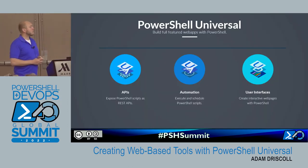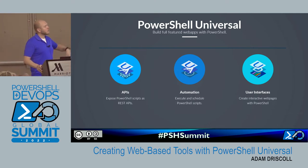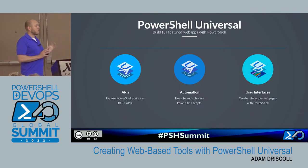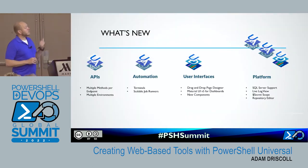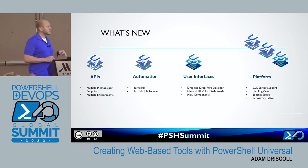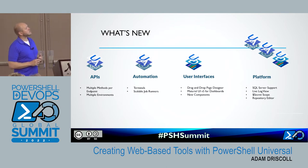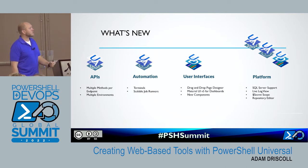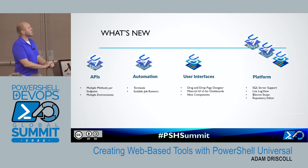PowerShell Universal has three major feature groups: APIs for REST APIs, automation which includes scripts with in-browser terminals and schedules, and user interfaces. Today I'm showing the page designer, and we also have Universal Dashboard integrated. I'm showing the V3 beta — some features are in V2 but some are new to V3, like improvements to APIs around multiple environments and methods per endpoint, SQL Server support for scaling out job runners and high availability, and new UI controls with an upgraded UI library for dashboards.